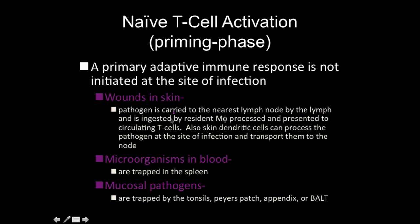It could be a lymph node in the context of a tissue or skin-level infection. It could be the spleen if we're talking about the blood. And if it's some type of a mucosal pathogen, it would be some type of mucosal-associated lymphoid tissue — the tonsils, Peyer's patches, appendix, and then specifically the BALT if you're talking about the bronchioles.